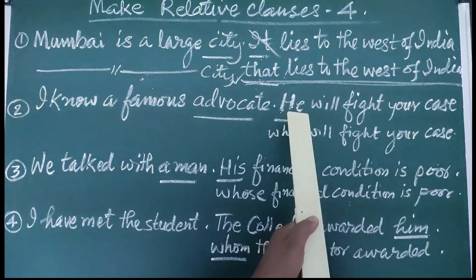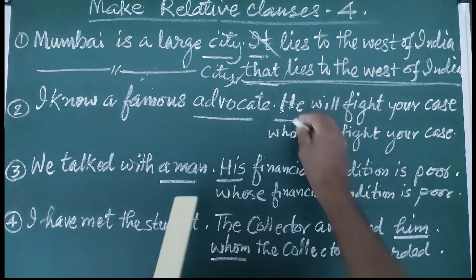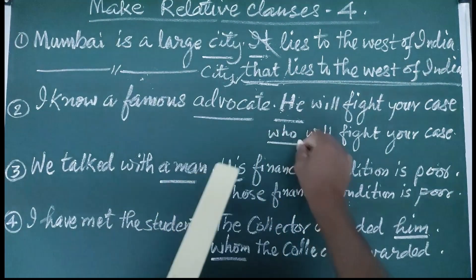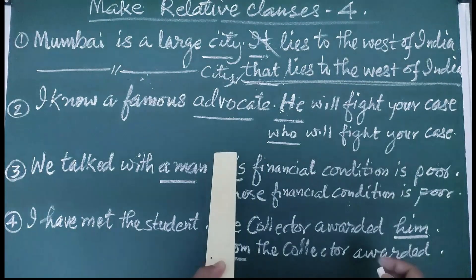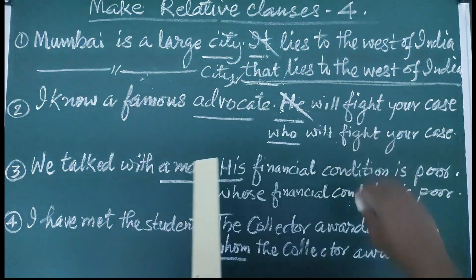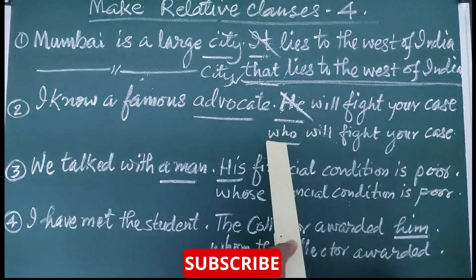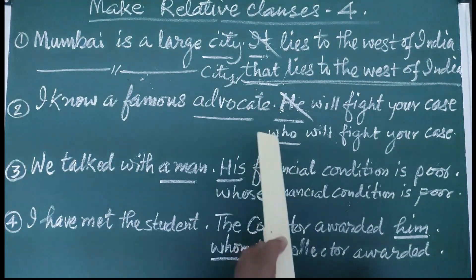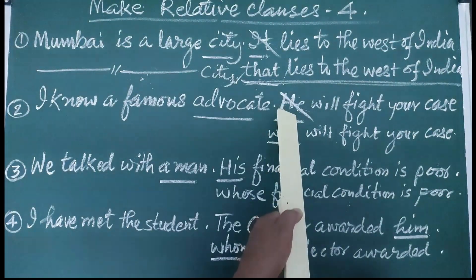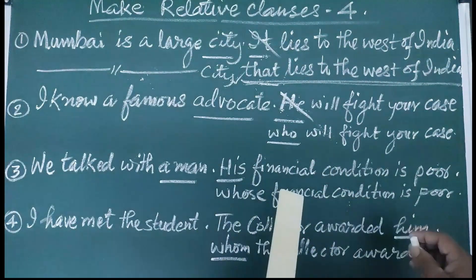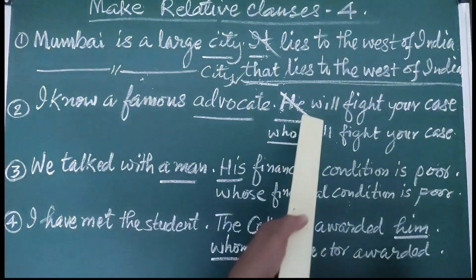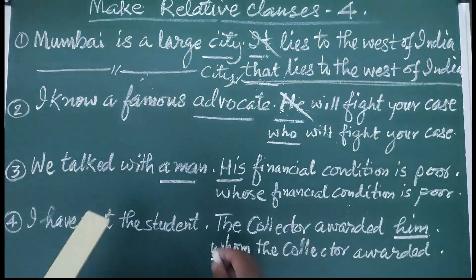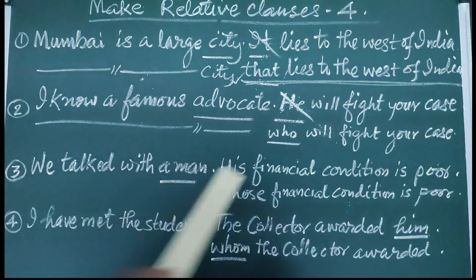Now we will find out which relative pronoun is suitable for 'he'. He is a pronoun and is the subject of the sentence. He comes under the category of human beings, therefore we have to delete 'he' and provide 'who'. The word 'who' can replace 'he' or 'she' — whatever singular subject is there. As per the rule, if the subject is 'he' or 'she', we write 'who'. So our sentence is: I know a famous advocate who will fight your case.